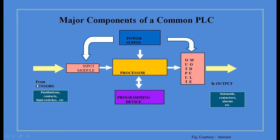What are the different input modules? Input will come mostly from sensors incorporated in the automation — like push buttons, contact switches, limit switches, and photo transistors. Different kinds of sensors and transducers will be used as input modules connected directly to the PLC body.